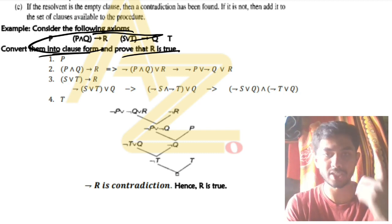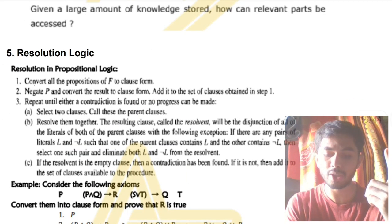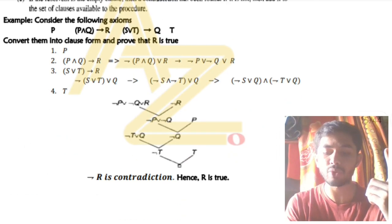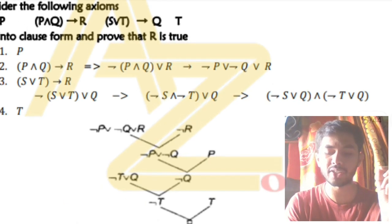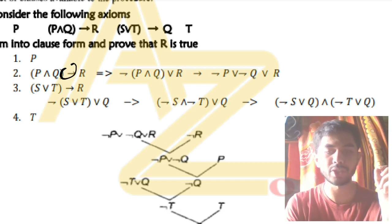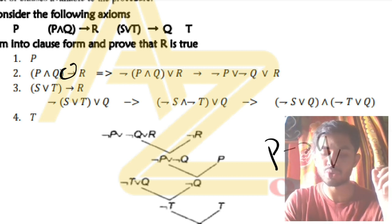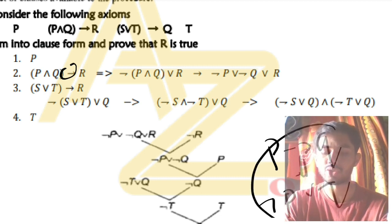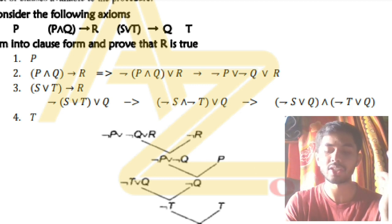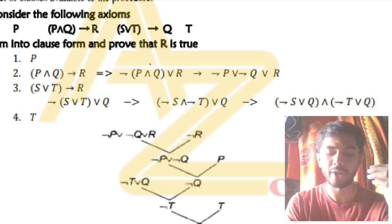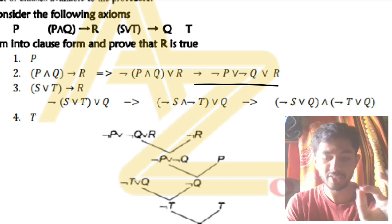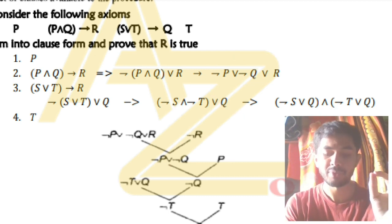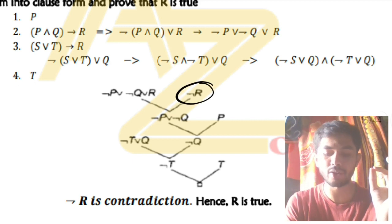The first step is to convert all propositions to clause form. After that, negate what they have asked — since they ask to prove r is true, write not-r. Conversion to clause form involves removing arrows using known laws: p implies q becomes not-p or q. You also use De Morgan's laws, commutative law, and distribution law to expand and simplify into clause form.